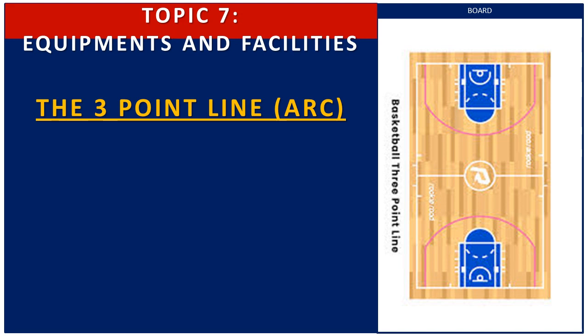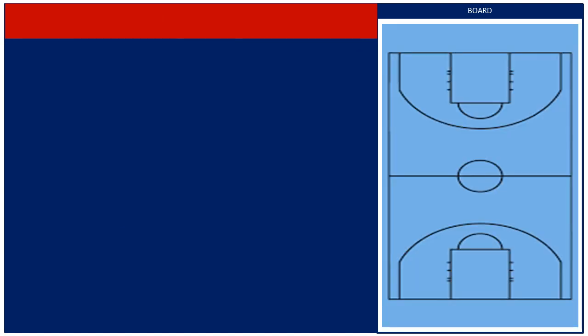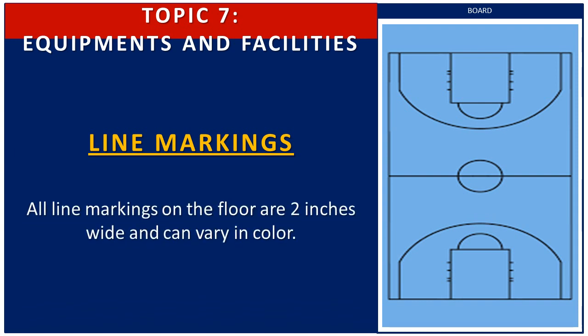For the 3-point line or arc on NBA courts, it is 22 feet to the center of the rim on the sides, with a straight line extending out 16 feet 9 inches from the baseline. Past those points, the line extends to 23 feet 9 inches from the center of the rim. All line markings on the floor are 2 inches wide and can vary in color.